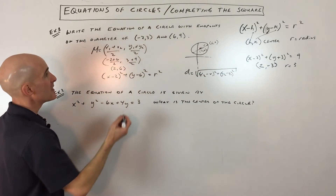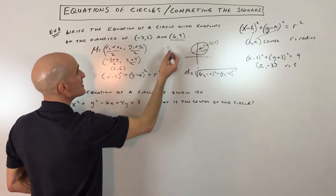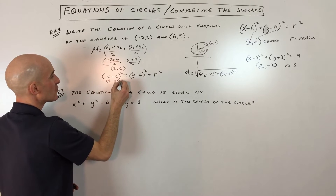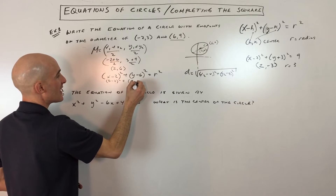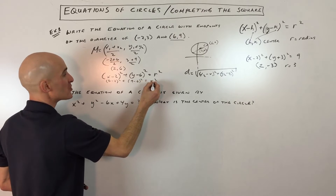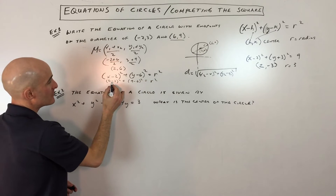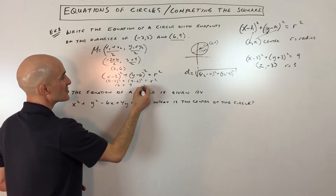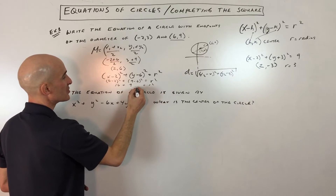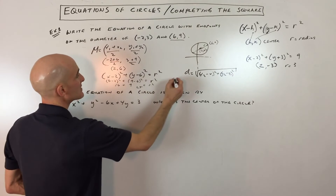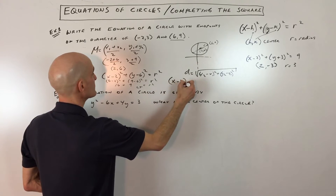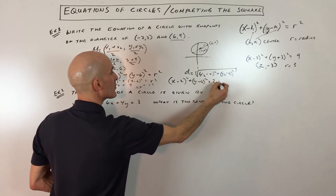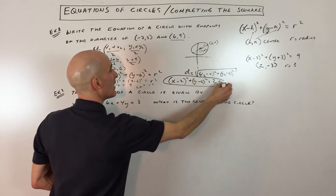Another way — which I prefer — is to just take one of the points, say (6, 9), and substitute it into the equation. Six minus two squared plus nine minus six squared equals r squared. That's four squared, which is 16, plus three squared, which is nine, so r squared equals 25. Our final equation is (x minus two) squared plus (y minus six) squared equals 25.